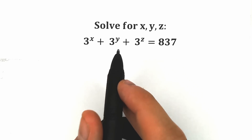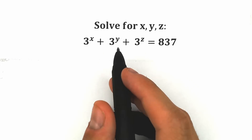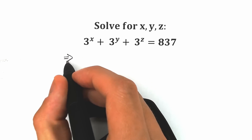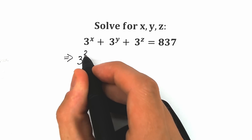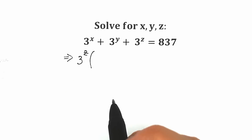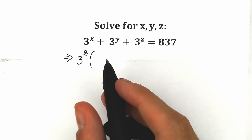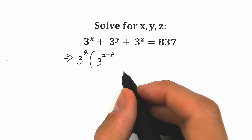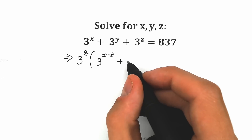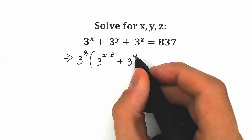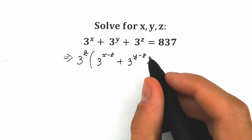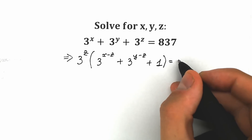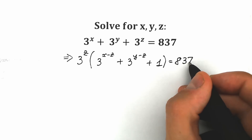First of all, let's factor 3 to the power z from the expression on the left side. When we factor 3 to the power z, we get: 3 to the power z times the quantity 3 to the power x minus z, plus 3 to the power y minus z, plus 1, equal to 837.